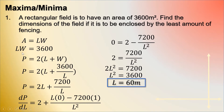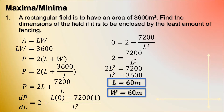Our L is the square root of 3,600, which is 60 meters. For our width W, we divide 3,600 by L, which is 60 meters, so the width is 60 meters also. The dimensions of the rectangular field, if you want to enclose it with the least amount of fencing, is 60 by 60 meters.